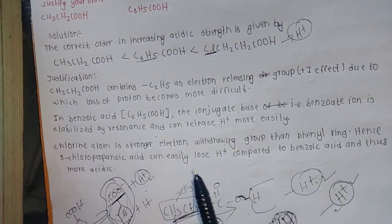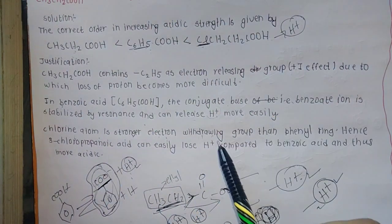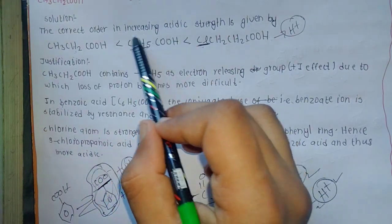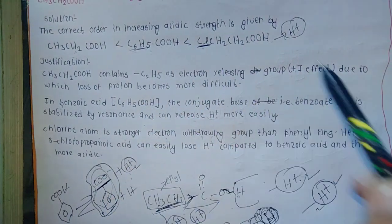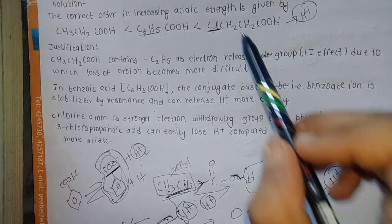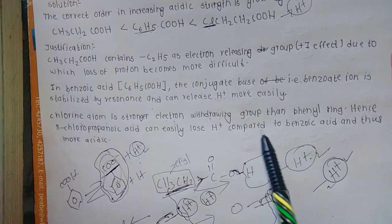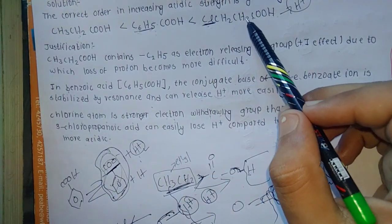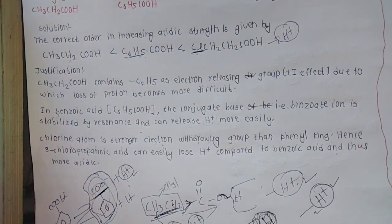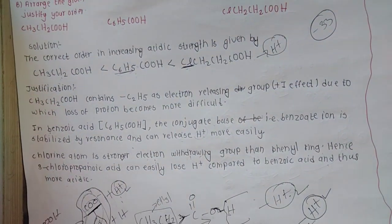The explanation and justification is that the chlorine atom is a stronger electron-withdrawing group than the benzene ring. This means 3-chloropropanoic acid can more easily lose H+ compared to benzoic acid, which releases H+ more readily than propanoic acid. This will be an explanation for the next question.